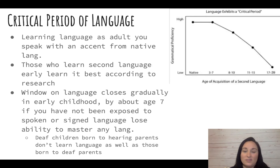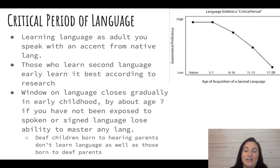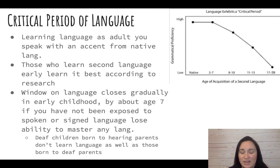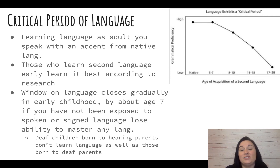If you look at the chart on the right, by age seven there is a significant drop-off in acquiring a second language. As an adult, if you learn a second language, you will always speak with an accent from your native language. So the best time to learn a second language is young, because our brains are equipped for that.